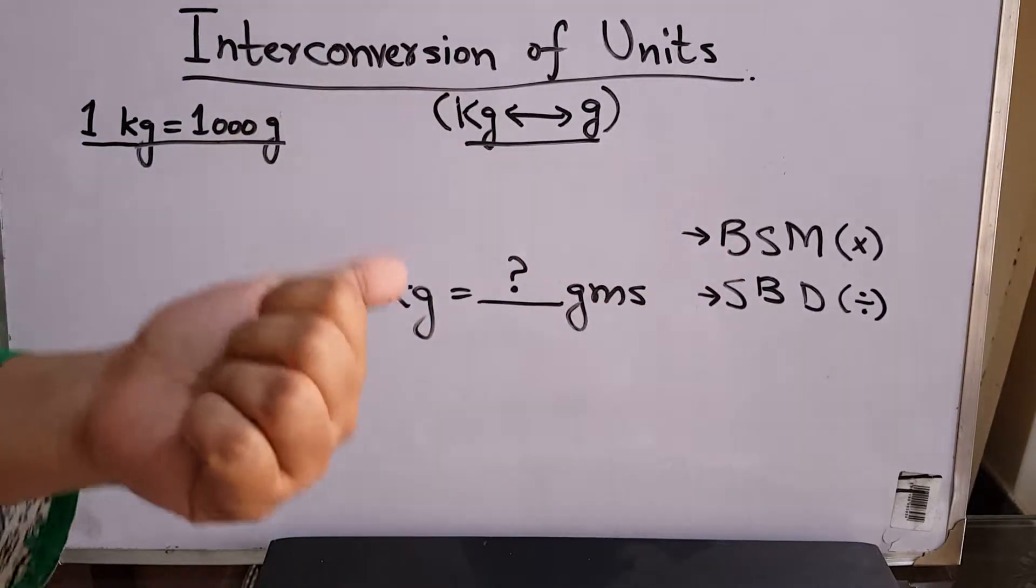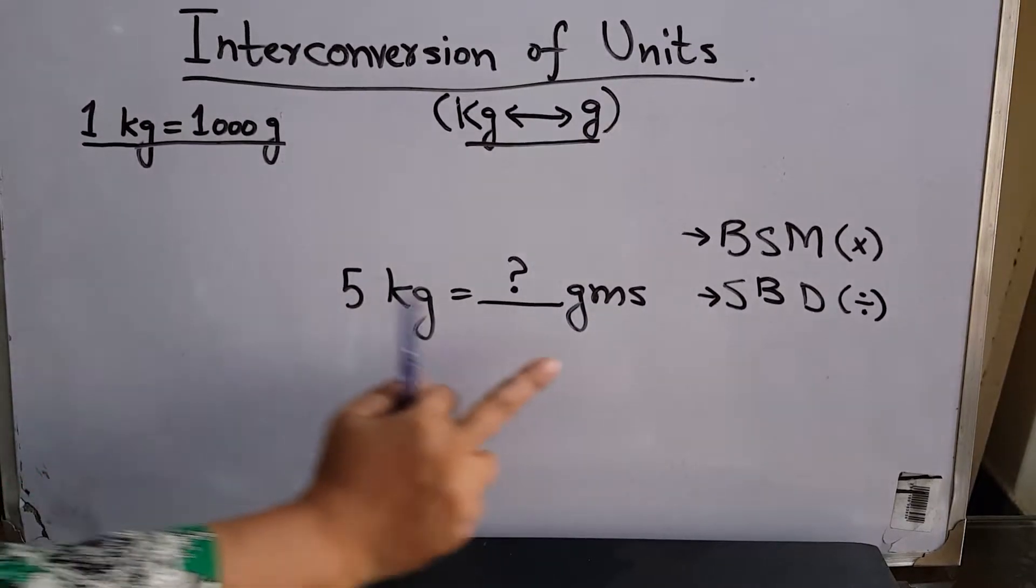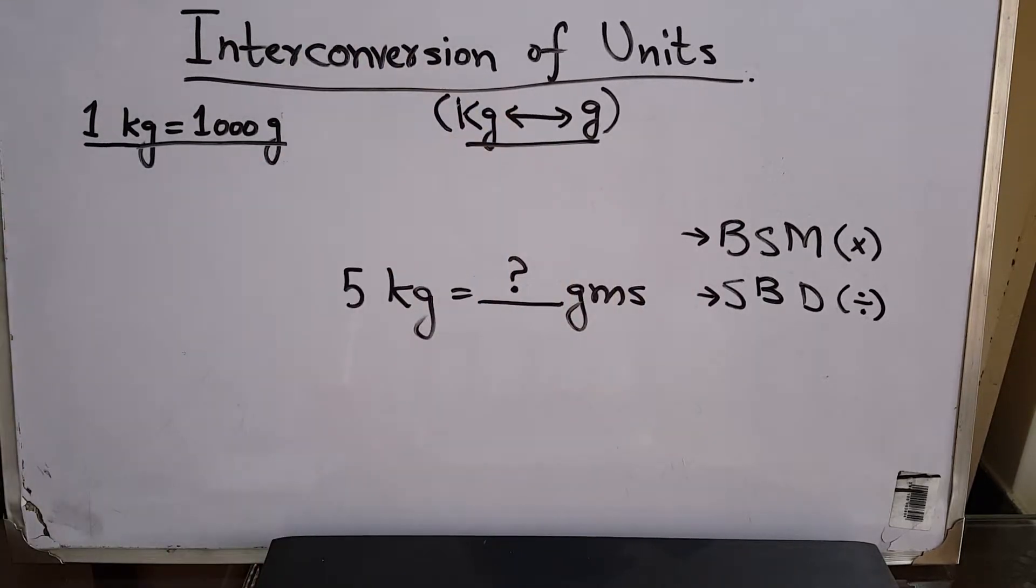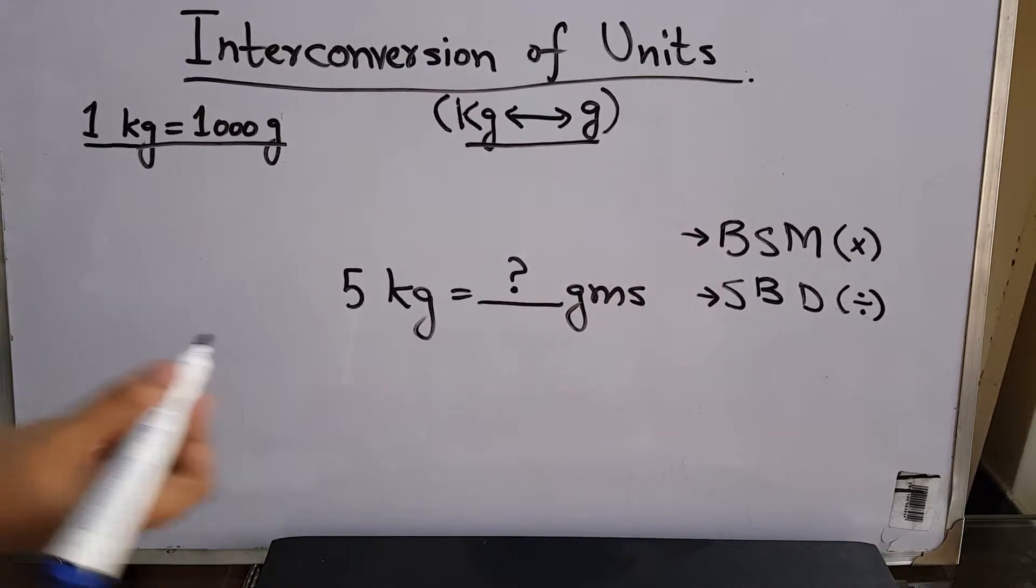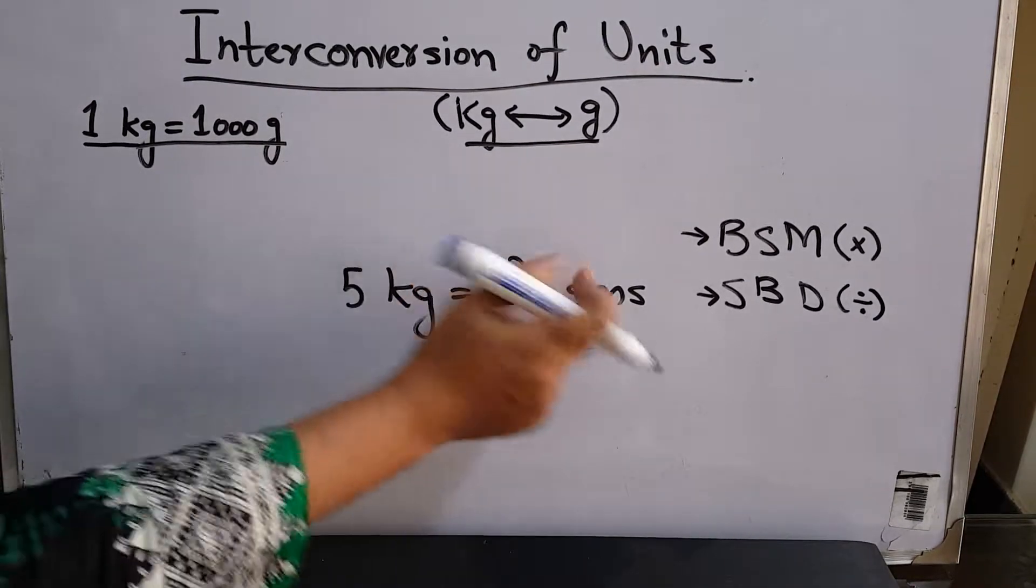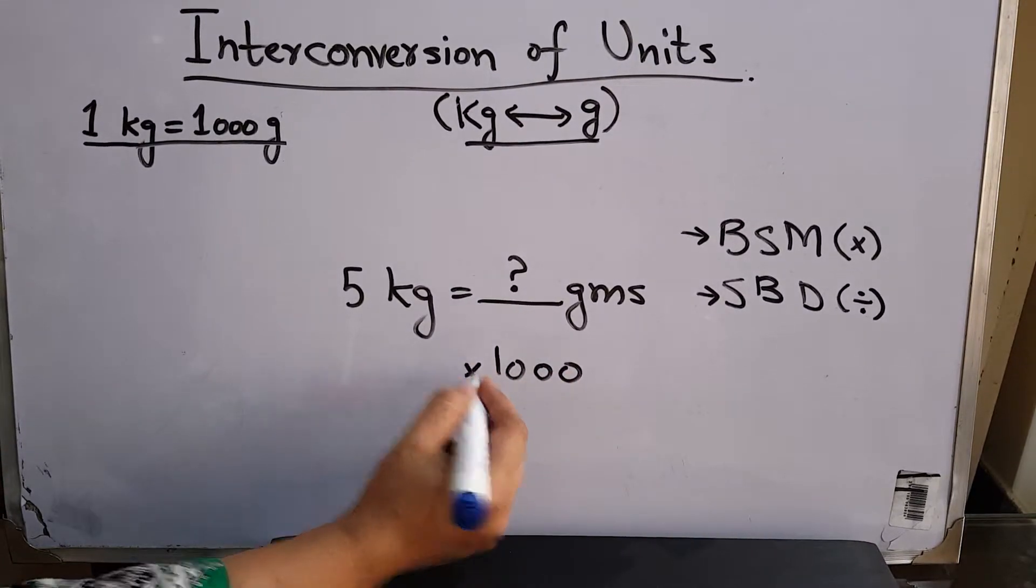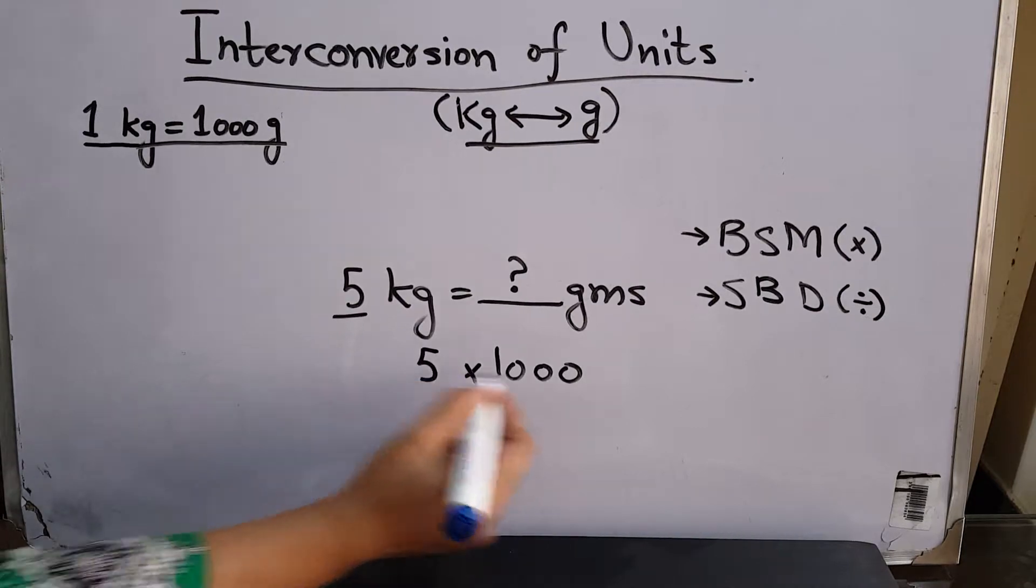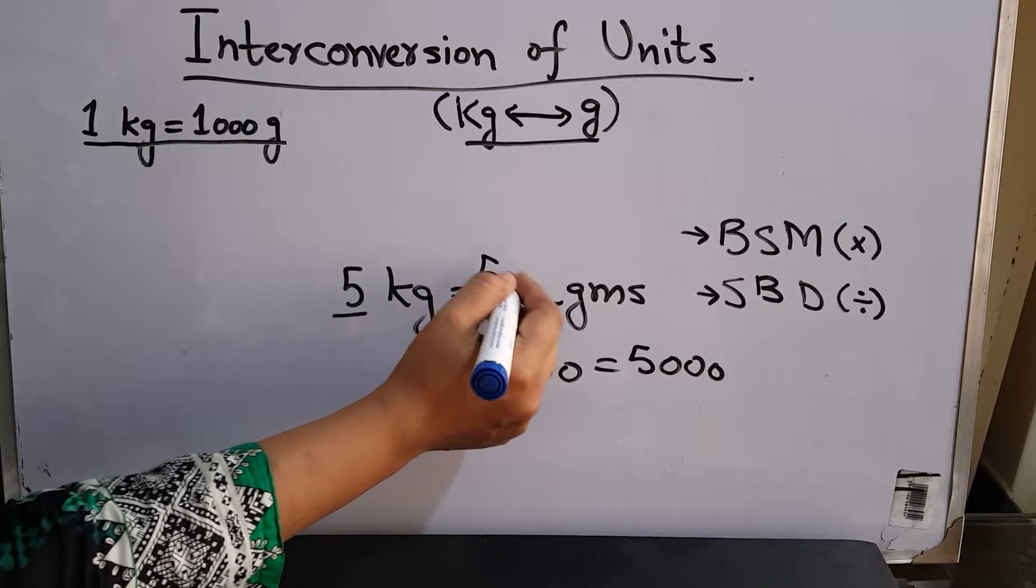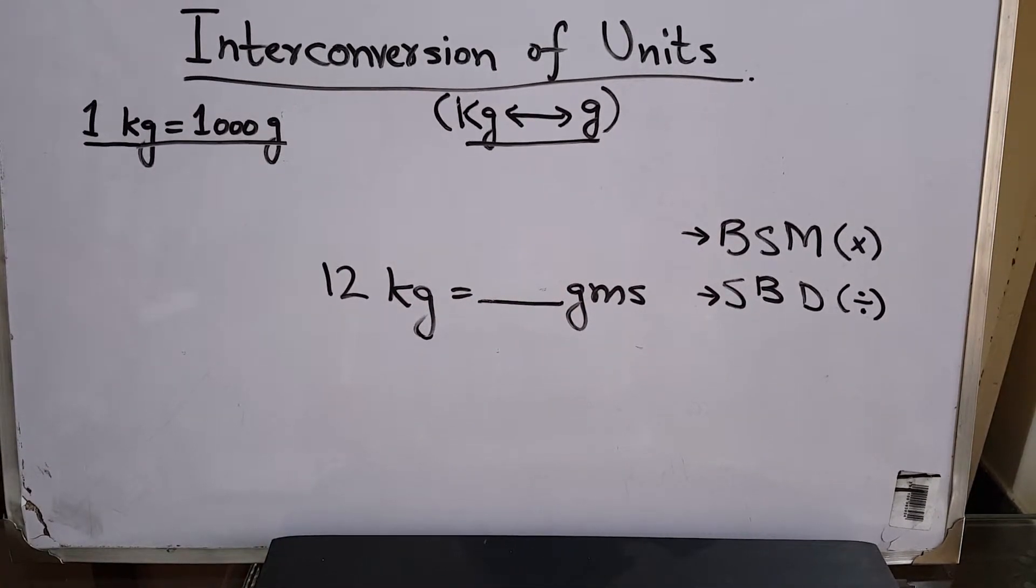That's how you remember when to multiply and when to divide. Since kg is a bigger unit and grams is a smaller unit, when going from kilograms to grams, you multiply. So the question is: how many grams are there in 5 kg? From bigger to smaller, you multiply by 1,000. So 5 times 1,000 equals 5,000 grams. There are 5,000 grams in 5 kg.